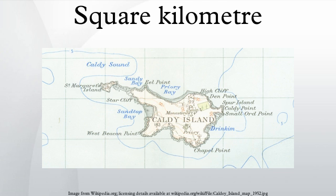There are 247.105381467 international acres in a square kilometre, while there are only 247.104393047 of the very slightly larger US survey acres. An international square mile equals 2.58998811 km², while the slightly larger US survey square mile equals 2.589999847 km².